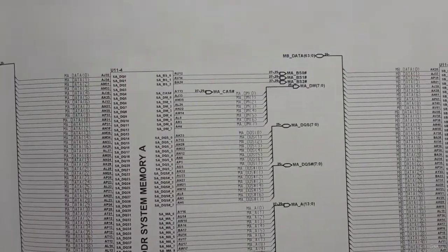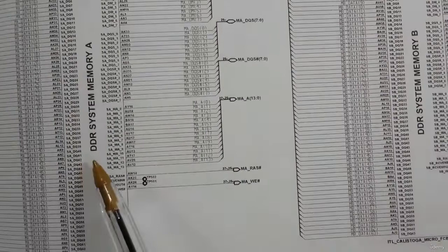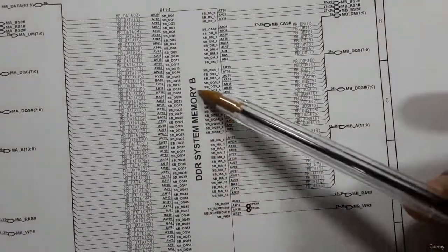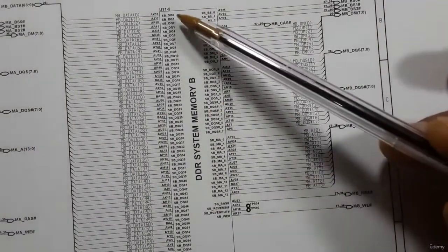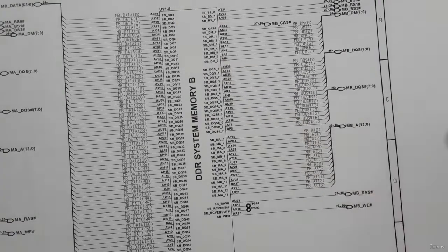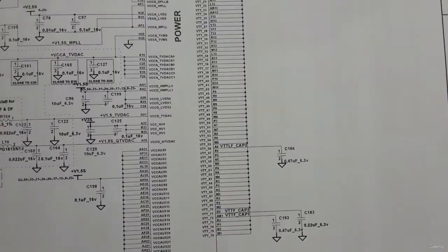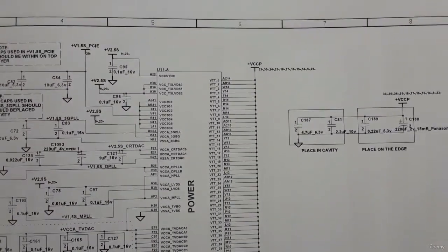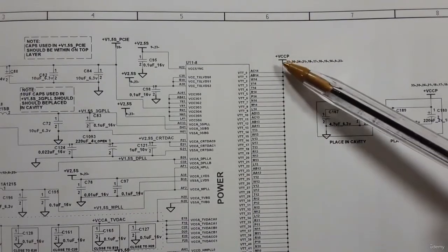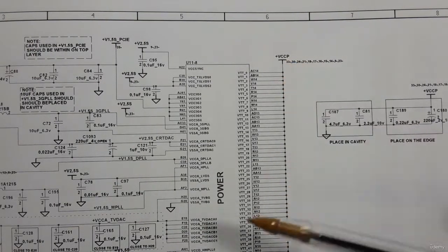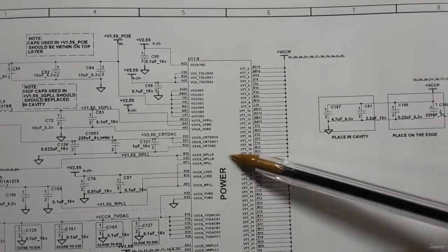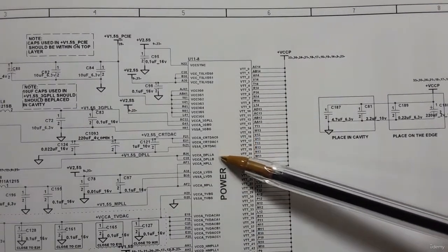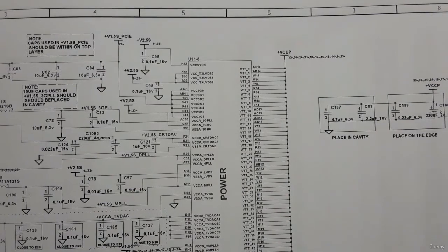Here we have the fourth part of the GMCH where we have DDR system memory A, and DDR system memory B — all those are controllers. This is the fifth part. Also here is the power section for the GMCH, where we have plus VCCP. All these pins are the power supply for the GMCH.